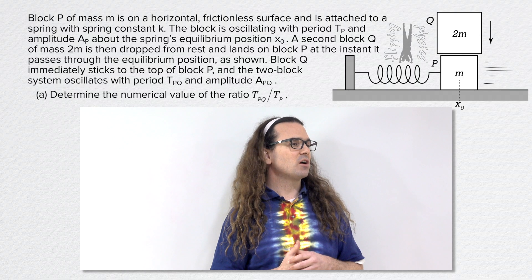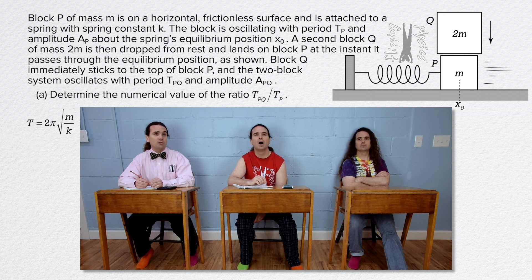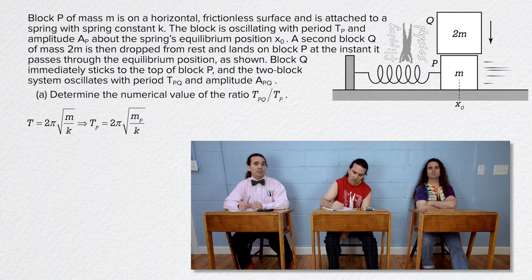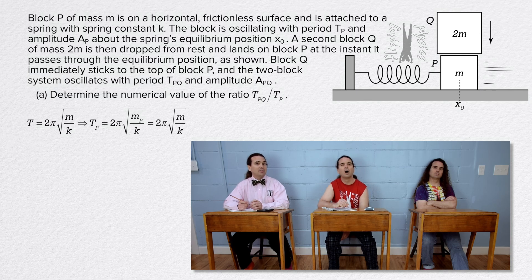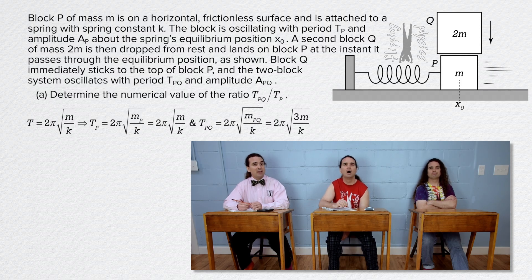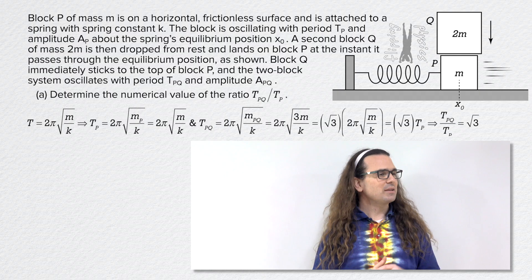Billy, please solve part A. The period of a mass-spring system equals 2π times the square root of the quantity mass divided by spring constant. That means the period of just block P equals 2π times the square root of m divided by k. And the period of blocks PQ equals 2π times the square root of the quantity mass of blocks PQ, which is m plus 2m or 3m, divided by k. We can isolate the square root of 3 to show that the period of blocks PQ divided by the period of block P equals the square root of 3.